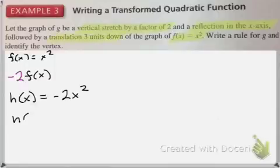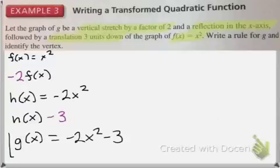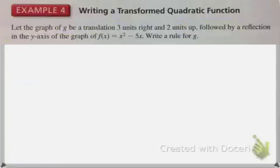Then it asks us to do a translation three units down. So I know that a translation down means I should subtract three from my entire function. Not from the x, from my entire function. So now that will look like my answer, which I call g(x) because I am done transforming, negative 2x squared minus 3.